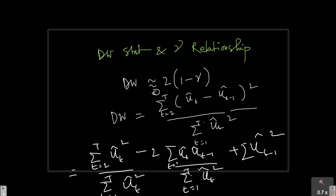And in all these cases, of course, in the numerator, t is equal to 2 to t, t is equal to 2 to t and in the denominator, it is t is equal to 1 to t. At the denominator, I am going to have t is equal to 1 to t ut hat square.